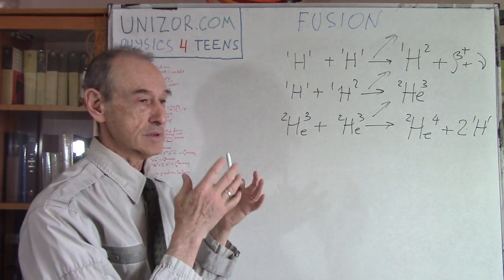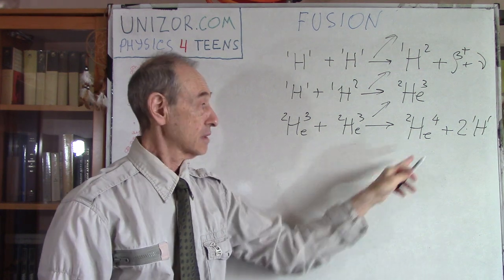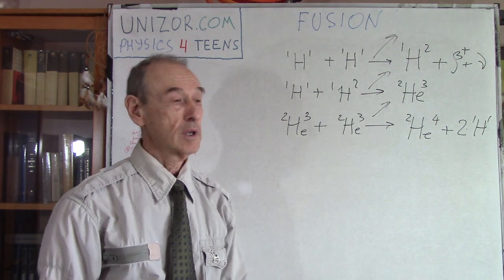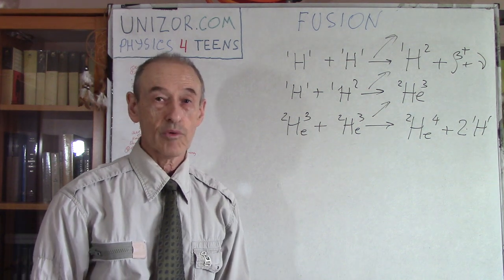That's basically the source of energy. Four atoms of hydrogen produce one atom of helium, and that's basically how the sun is working.